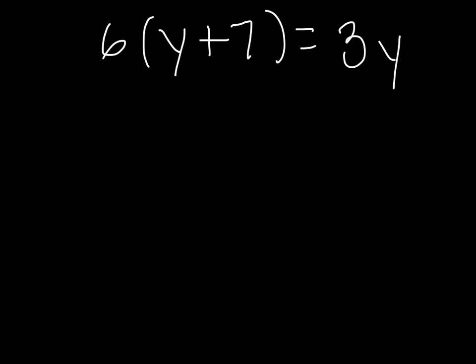Alright, go ahead and solve this one. And we'll check together. So again, the first thing that we have to do is combine like terms and or distribute. So let's distribute our 6 to our y. That's 6y. And our 6 to our 7. That's positive 42. And that has the same weight as 3y. We have no other distribution or combining of like terms.